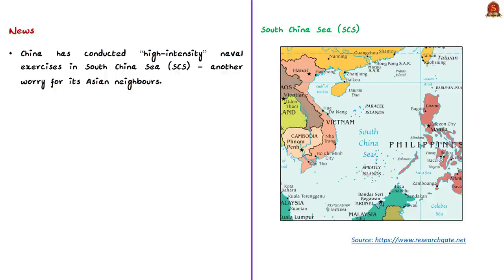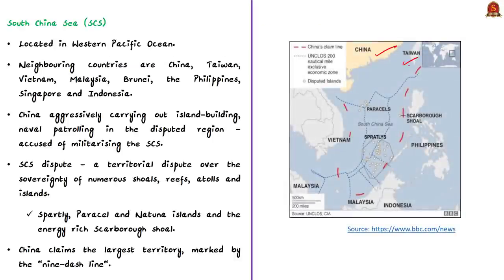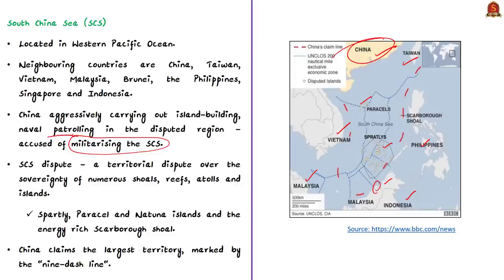Looking at the map, many players are stakeholders here — China, Taiwan or Chinese Taipei, Vietnam, Malaysia, Brunei, Philippines, Singapore, and Indonesia. The most aggressive is China, which has started island building, island development, and naval patrolling in the disputed region. This is why countries such as the United States and Australia have accused China of militarizing the South China Sea. Per official US government reports, between December 2013 and October 2015, China built artificial islands totaling close to 3,000 acres on seven coral reefs it occupies in the Spratly Islands.